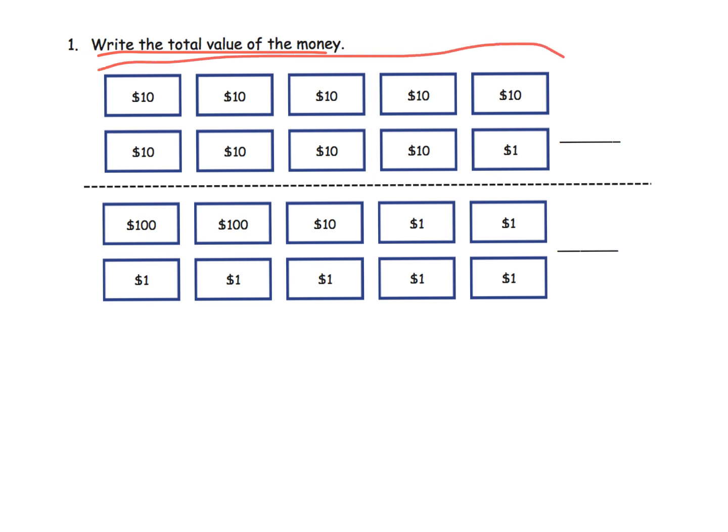I'm going to begin by counting up all the tens. I can see all of these are the tens. Let's count: 10, 20, 30, 40, 50, 60, 70, 80, 90. So there's our 90 dollars, plus we have one dollar bill left over, so our total amount is 91.